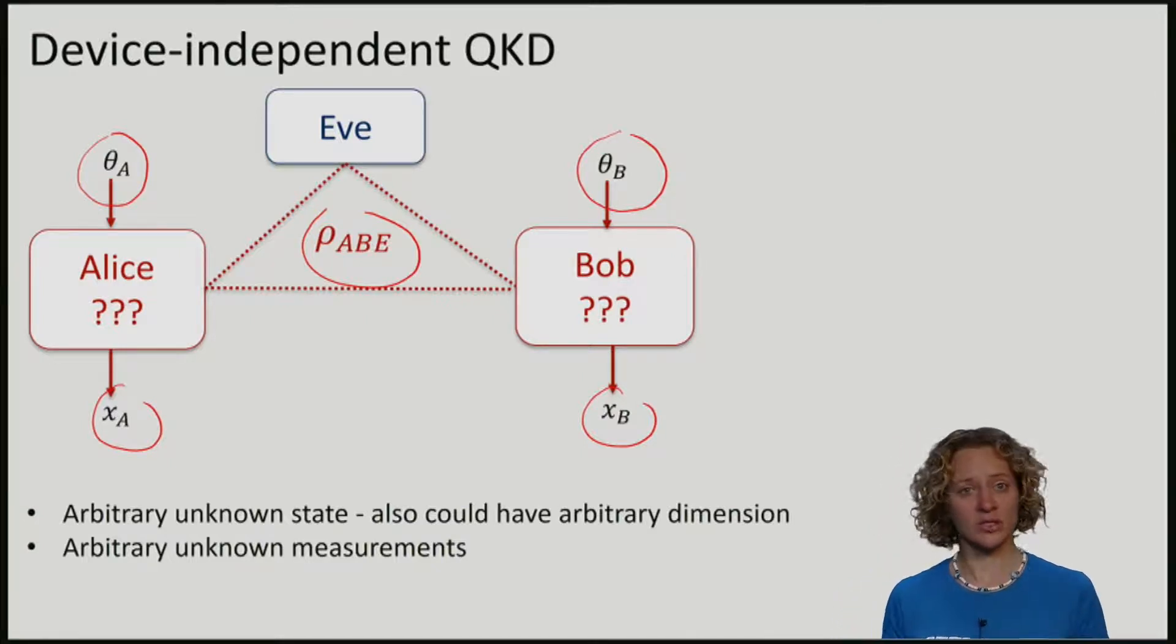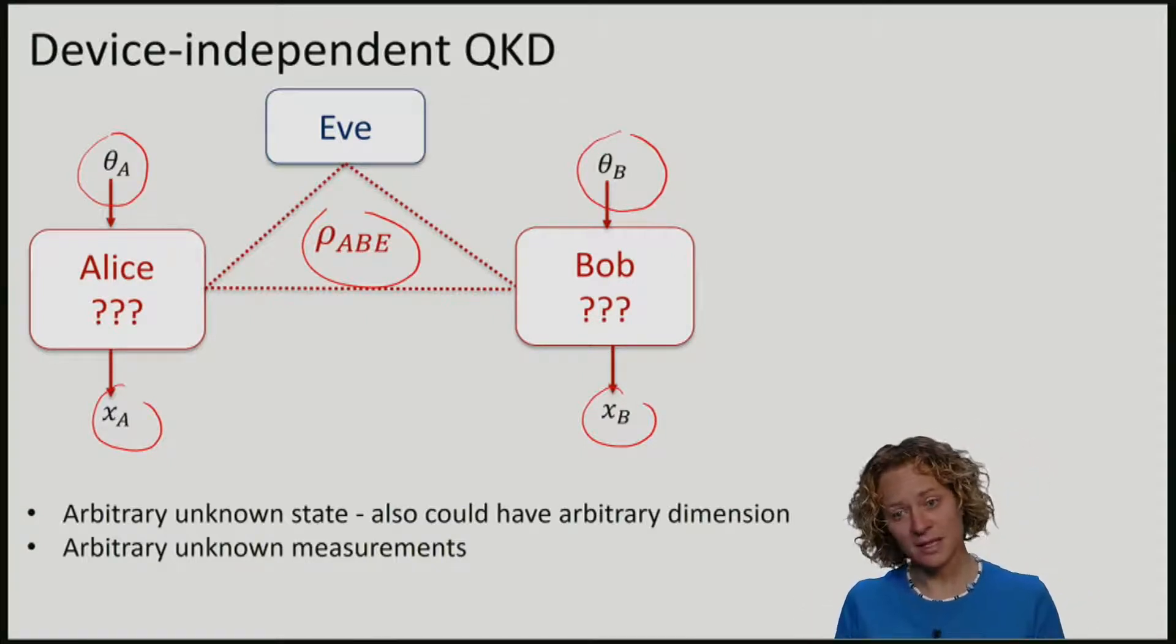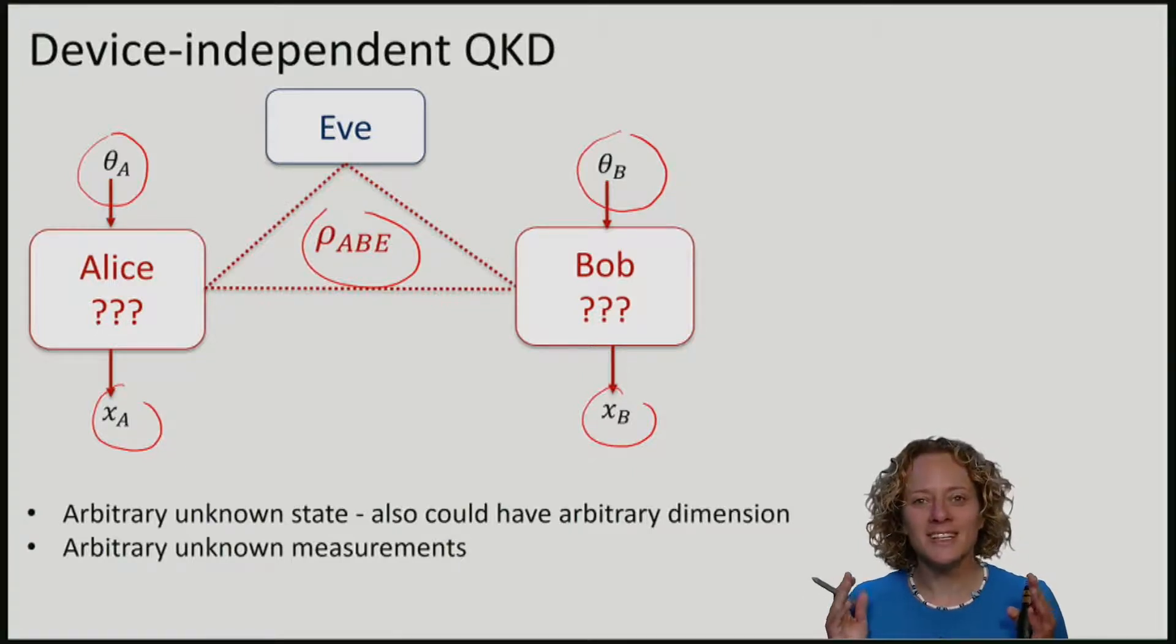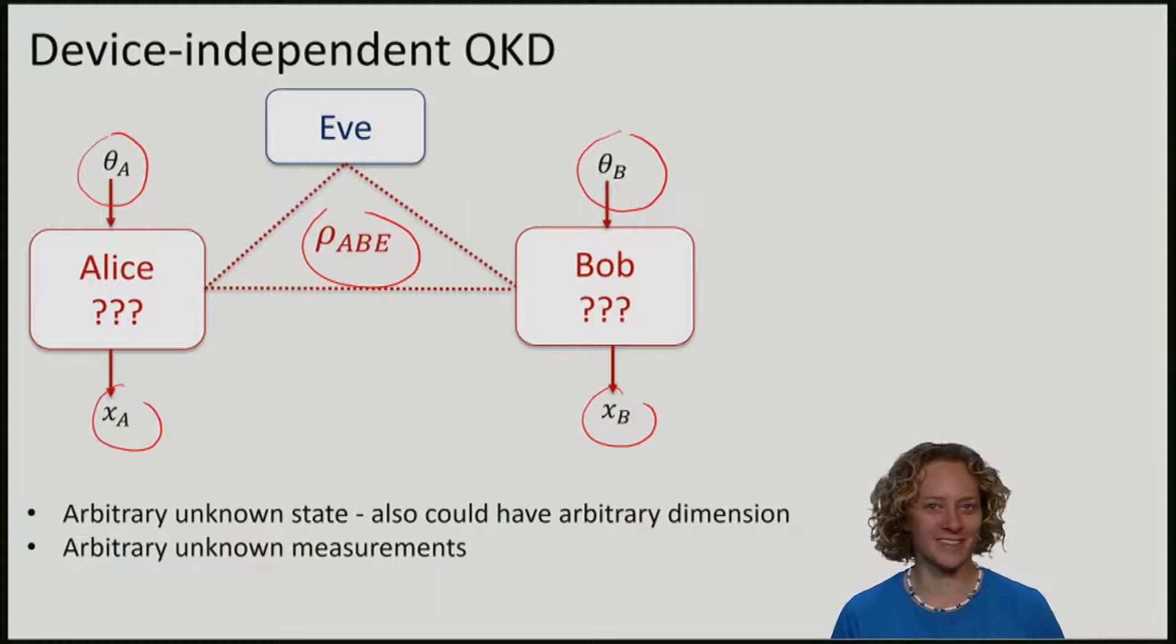Device independence is very powerful. We allow any state and any measurements. Any device, even one which is maybe imperfectly implemented, certainly satisfies these conditions. In device-independent, we go one step further and imagine that maybe even Eve is the one who prepared these devices. Eve picked the state and the measurements.